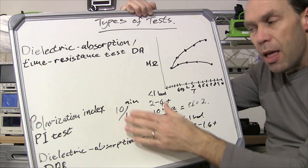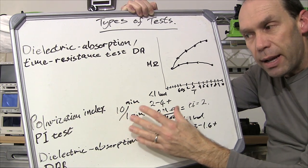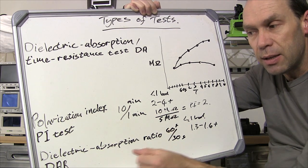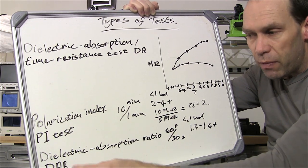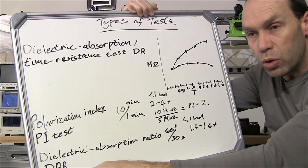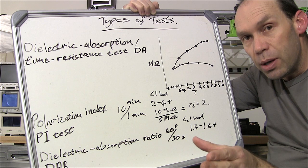That's a 10 minute test and obviously that can take a bit of time and you might not have the time or the luxury to do that test. So there's a shortcut version of that and that is called the dielectric absorption ratio or your DAR test that you can do in a minute.